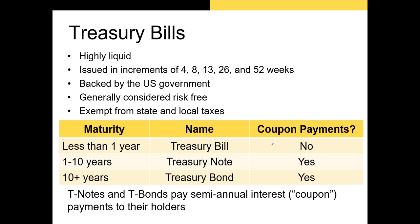In addition to T-bills, the federal government also issues T-notes and T-bonds, and it's important to know the difference. T-bills are short-term assets maturing in a year or less. T-notes mature in one to ten years, while T-bonds mature in more than ten years. Another big difference is that T-bills don't pay coupons, whereas T-notes and T-bonds do. The coupons on T-notes and T-bonds are paid to the federal government's creditors every six months until maturity. The amount paid is the coupon rate times the face value of the bond divided by two — we'll talk about that formula later in the course. For now, let's take a look at some T-bills.